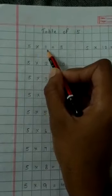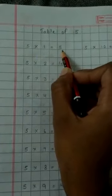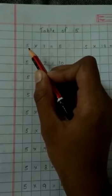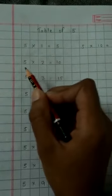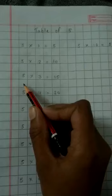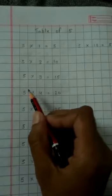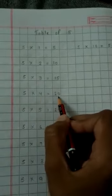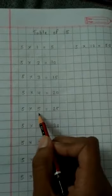5 into 1 is equal to 5. You will read it as 5 ones are 5. 5 twos are 10, 5 threes are 15, 5 fours are 20, 5 fives are 25.